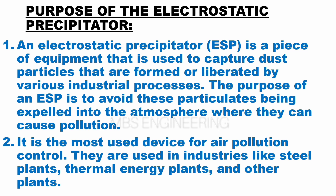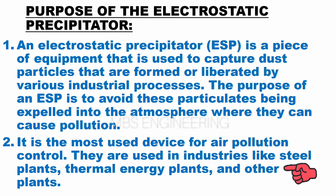The first topic is the purpose of the electrostatic precipitator, ESP. An electrostatic precipitator is a piece of equipment used to capture dust particles that are formed or liberated by various industrial processes. The purpose of an ESP is to avoid these particulates being expelled into the atmosphere, where they can cause pollution. It is the most used device for air pollution control, and is used in industries like steel plants, thermal energy plants, and other plants.